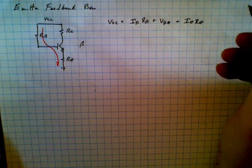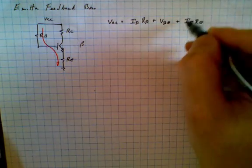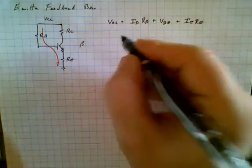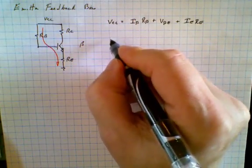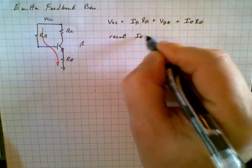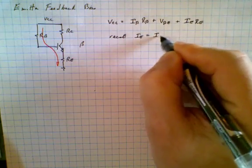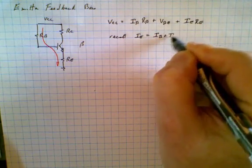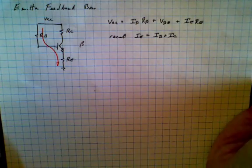Now again, we want to simplify this expression and we want to get rid of the Ie term. So we remember that Ie is equal to Ib plus Ic.